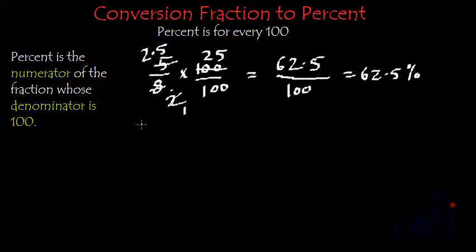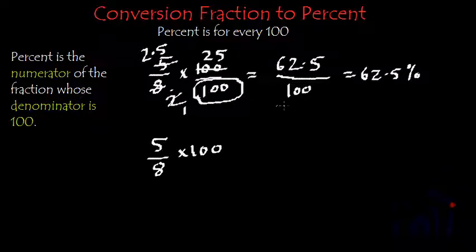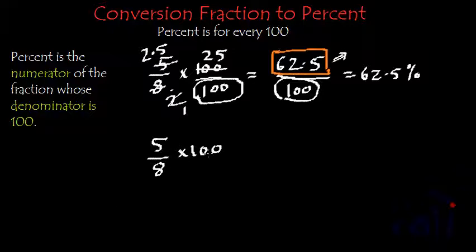So this means that if you have to convert a fraction which is 5 by 8 into percent, you just have to multiply it by 100 because we are not actually considering this 100. Percent is the numerator of a fraction whose denominator is 100. So we are just talking about the numerator which is 62.5 over here. That suggests that if we multiply a fraction by 100, we will get a value in percent. Because anyway we are not considering the denominator.